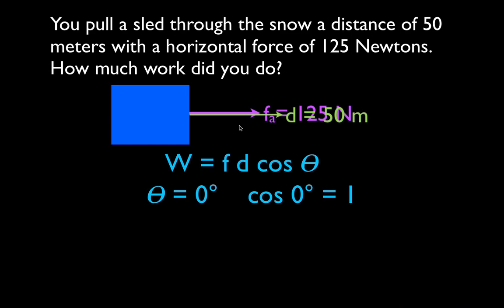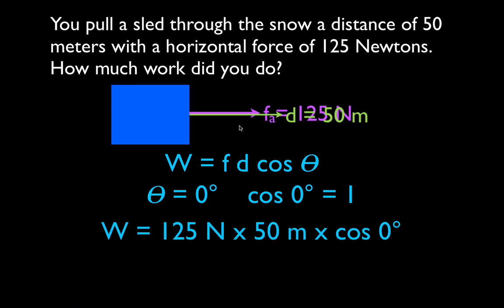That means we take the force times the distance times the cosine of zero degrees. The cosine of zero degrees is one, so it's 125 times 50 times one, which gives us 6,250 joules. When you apply a force of 125 newtons over a distance of 50 meters, you do 6,250 joules of work. In this case the force and the displacement were horizontal — parallel to each other — and that is not always the case.